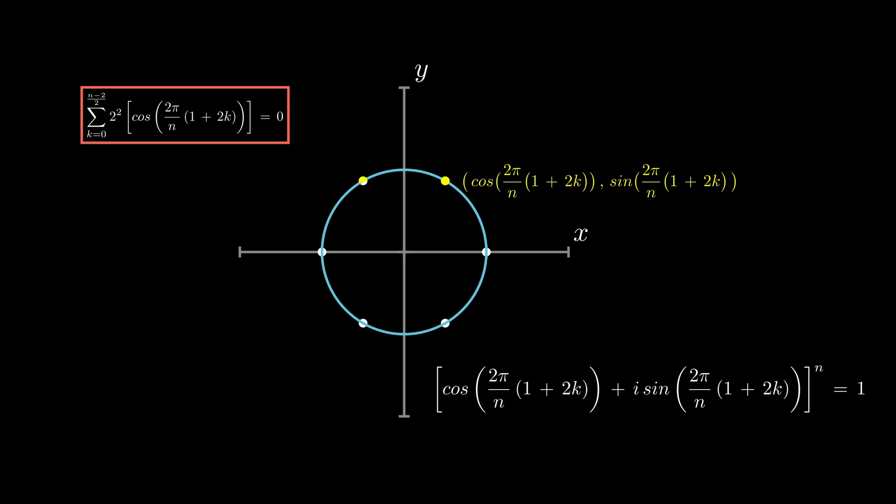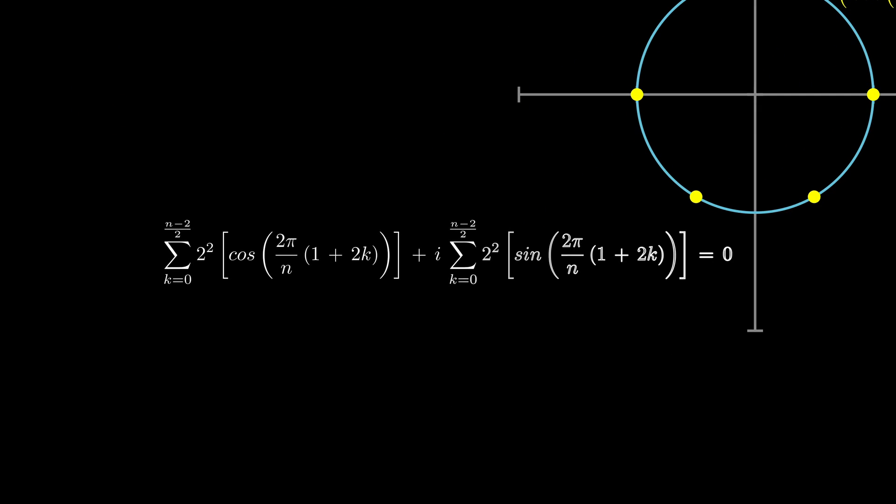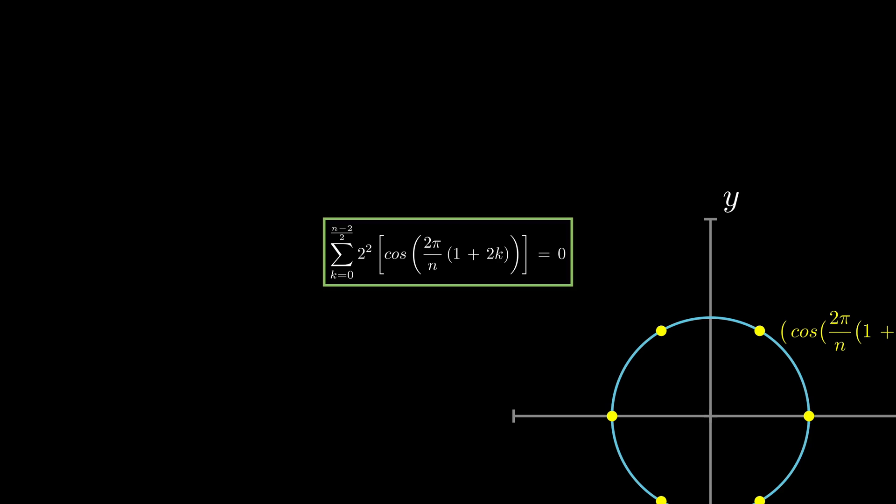Fun fact! The sum of all nth roots of unity is 0, because it is actually a geometric progression, where the term to the nth power is 1. Because it is 0, both the real and the complex components are 0, so sine and cosine series are both 0.